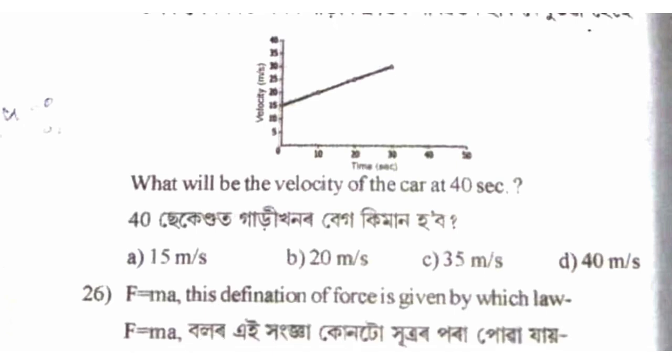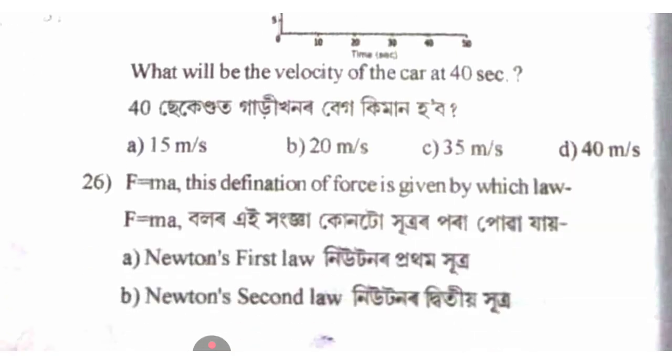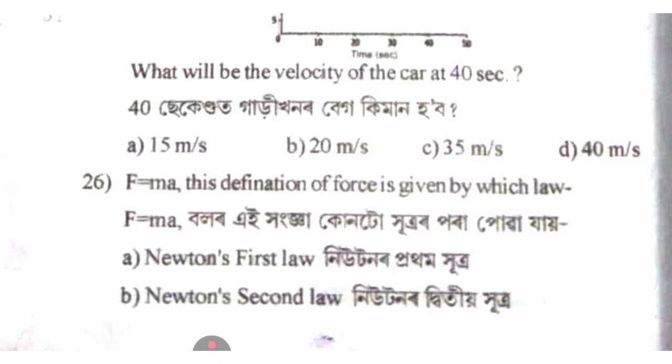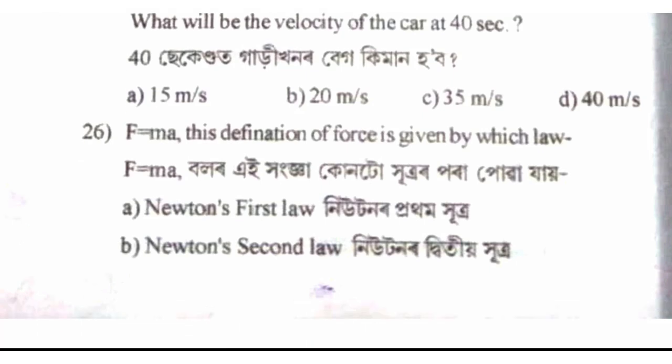The second value is 35 meters per second. From the graph, the answer option is C. The definition of force is given by Newton's second law, option A.